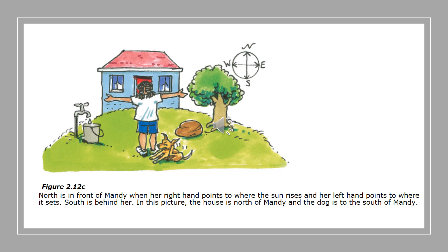Did you know, grade 4s, that there are more than four compass points — there are actually 16! The way that you can remember the four main ones — north, east, south, and west — is by remembering the little rhyme: Never Eat Silk Worms.